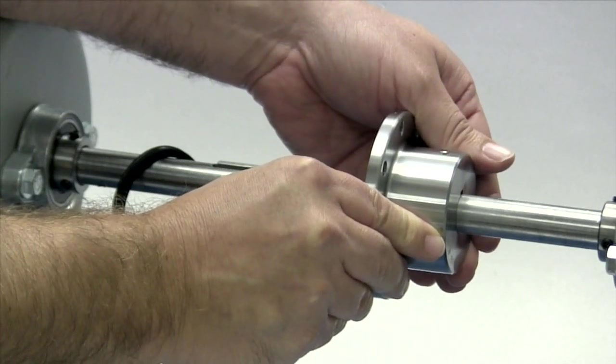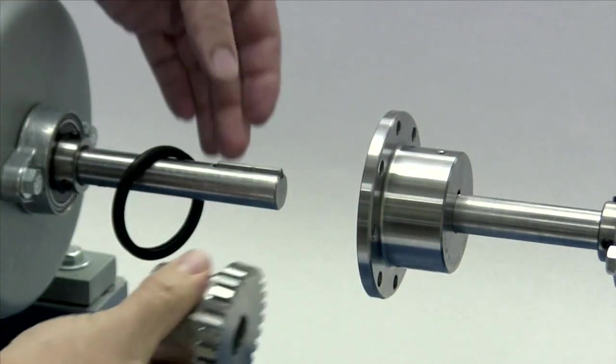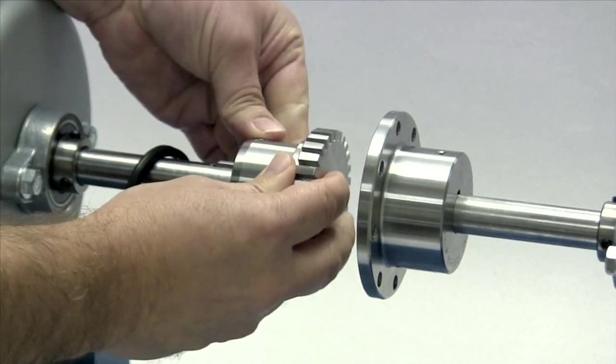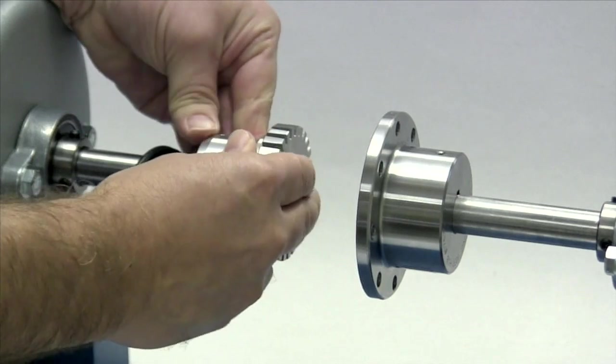We will mount the shaft hub on the appropriate shaft and the standard hub on the other shaft where we already placed the seal. The keys in the hub should be flushed with the ends of the shafts when installed.